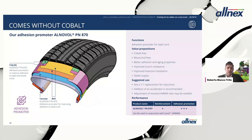A similar story applies to the Alnex PN870, which is used for cord adhesion — specifically steel cord. Often cobalt is used as an adhesion promoter between steel cord and rubber, and with this resin you can eliminate cobalt from your formulation. Cobalt is a very critical material regarding supply chain and price, and with the rise of electric vehicles, demand for cobalt used in EV batteries is high and therefore so is the price. This resin provides a good alternative to eliminate cobalt from your compound.